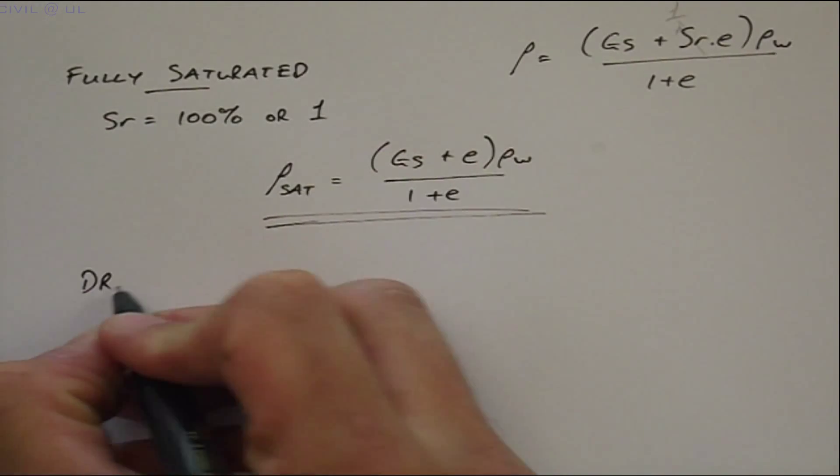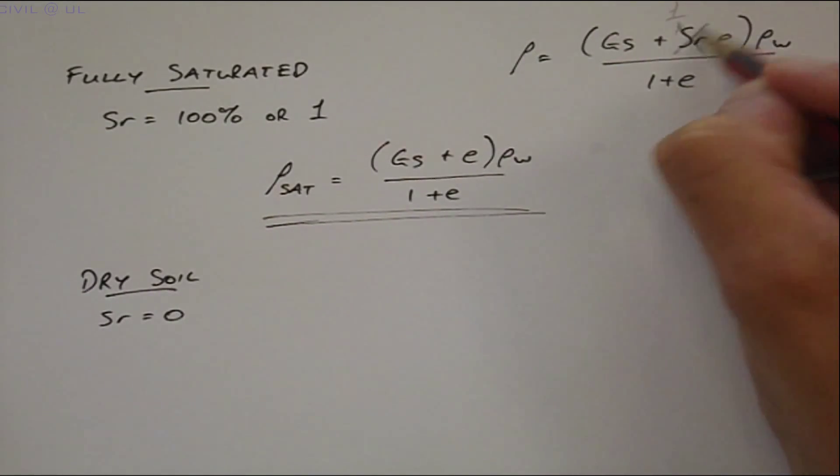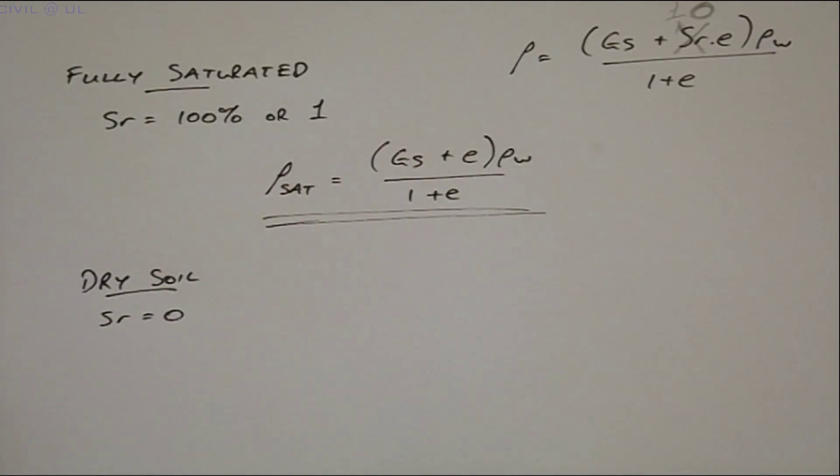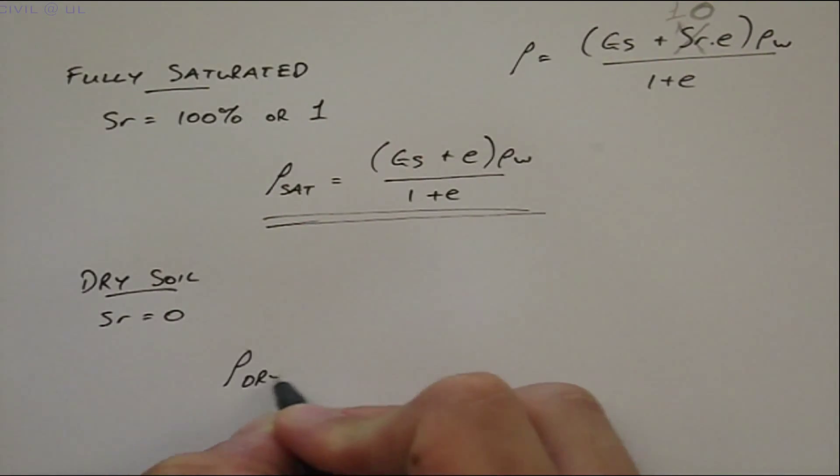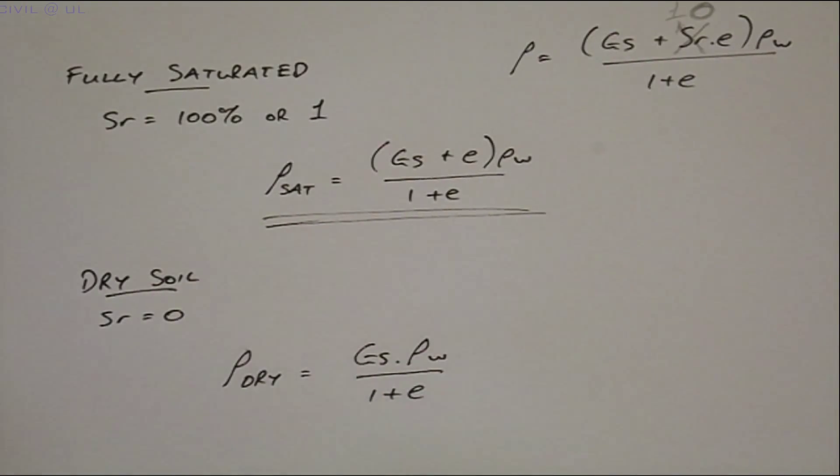Similarly, if the soil is dry, SR is equal to 0, and the dry density is given by GS times ρW, all over 1 plus E.